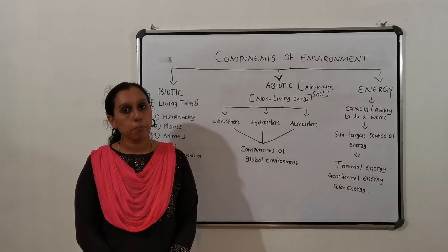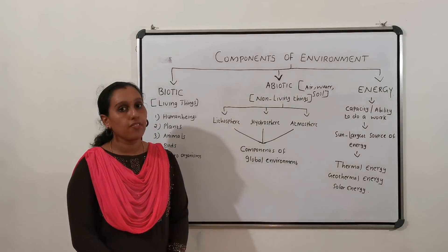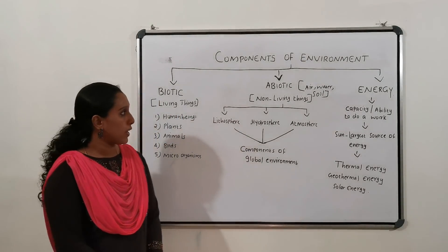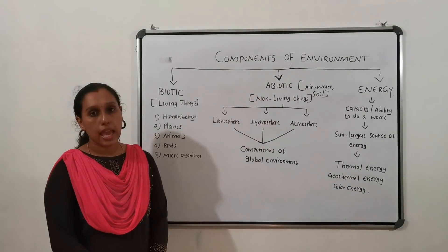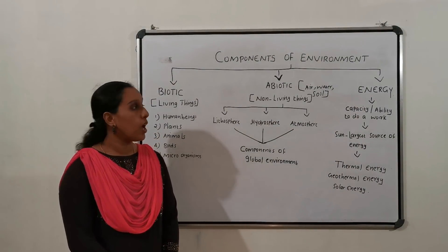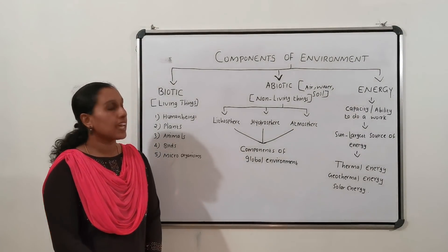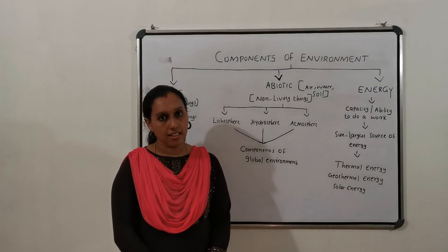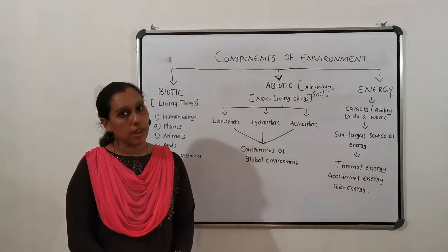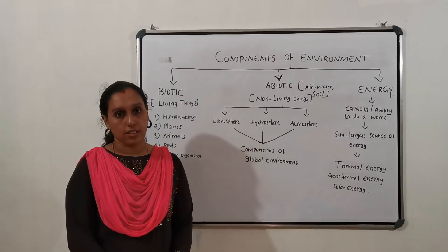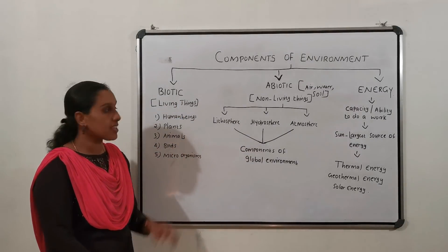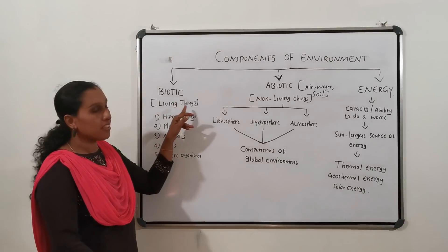We can mainly divide the components of environment into three. They are biotic, abiotic and energy. What is biotic?